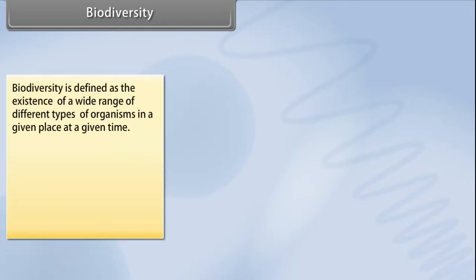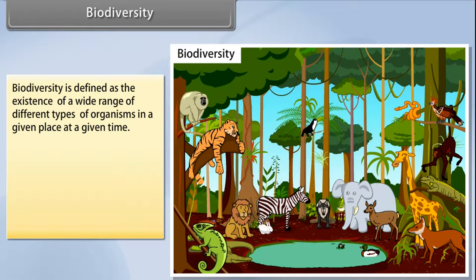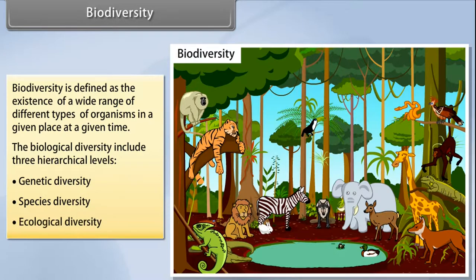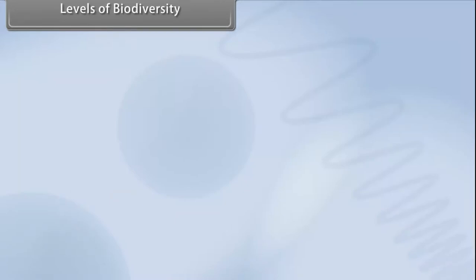Biodiversity is defined as the existence of a wide range of different types of organisms in a given place at a given time. The biological diversity includes three hierarchical levels: genetic diversity, species diversity, and ecological diversity. Let's know more about them in detail.